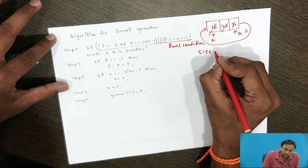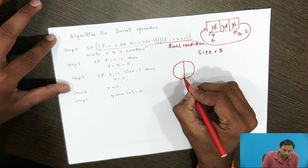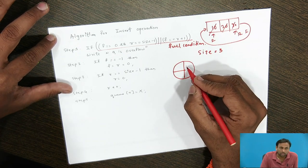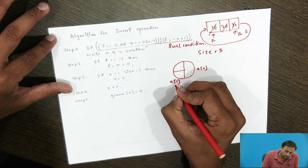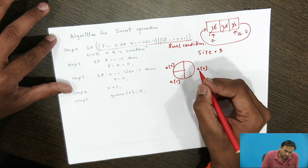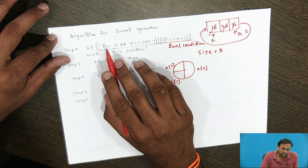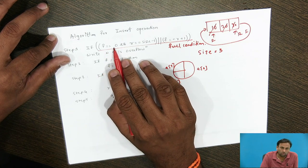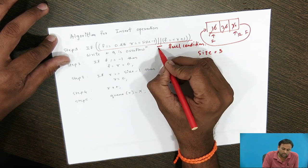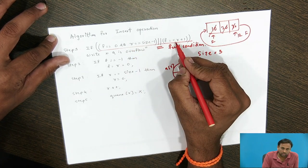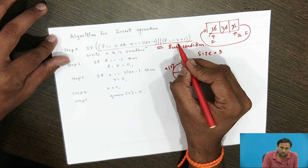Suppose we take size equal to 3. We draw a circle because we are logically connecting the last end to the first end. The positions are A[0], A[1], and A[2]. Before inserting new elements, every time we check the full condition: F == 0 AND R == size - 1, OR F == R + 1. If either condition is satisfied, the queue is full.